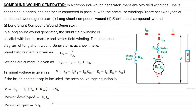Next is the compound wound generator. In a compound wound generator there are two field windings: one connected in series and another in parallel. There are two types: long shunt compound and short shunt compound. In a long shunt compound wound generator, the shunt field winding is in parallel with both the armature and series field. You can observe that the shunt field is parallel with the armature as well as the series field — the armature and series field are in series with each other.